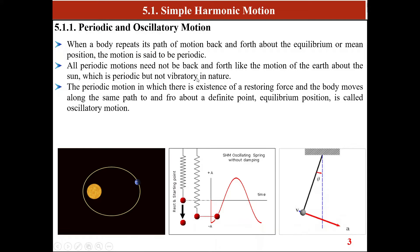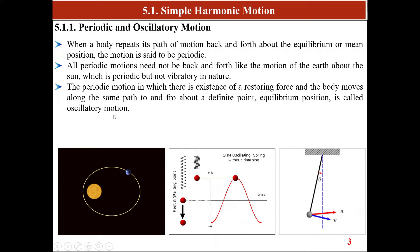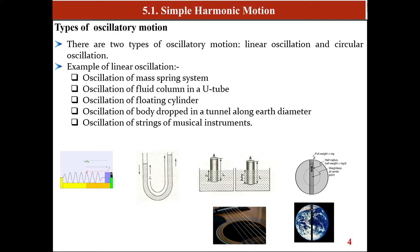The motion of the Earth about the Sun is periodic but not vibratory in nature. The periodic motion in which there is a restoring force and the body moves along the same path to and fro about an equilibrium point is called oscillatory motion. Types of oscillatory motion include linear oscillatory motion and circular oscillatory motion. Examples of linear oscillatory motion include the oscillation of a mass-spring system and the oscillation of fluid in a U-tube column.